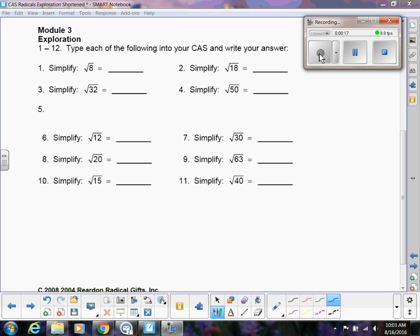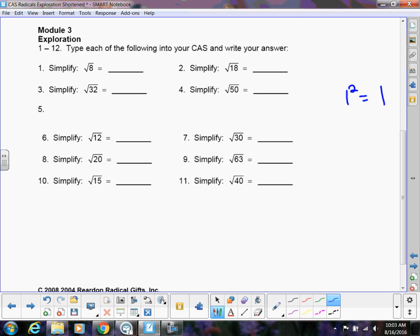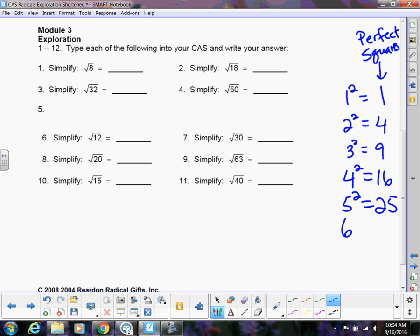All right, so remember when we're simplifying square roots we want to be looking for perfect square roots that are factors of the number underneath the radical. So remember that our perfect squares are these numbers right here. These are the numbers we want to look to make sure that to see if there are factors. And remember we want the highest factor, the highest perfect square factor that we can get.